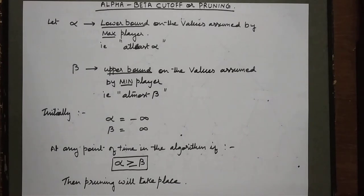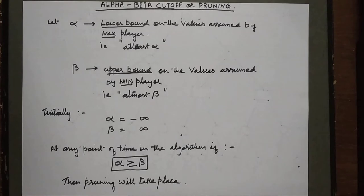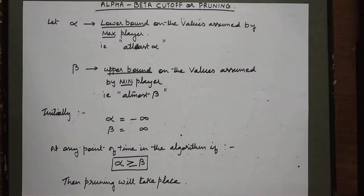If you calculate the complexity for minimax algorithm, it is O(b^d), where b is the branching factor of the tree and d is the depth of the tree. So what is the solution for this disadvantage? The solution is pruning the tree. The branches that are unfruitful need not be visited — they can be skipped. Cutting off the unuseful or unfruitful branches is called tree pruning.